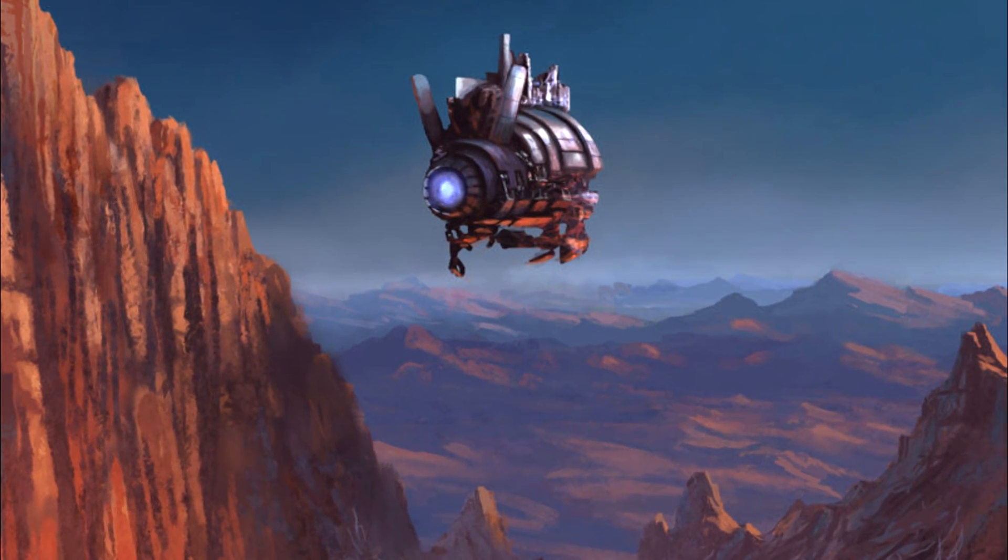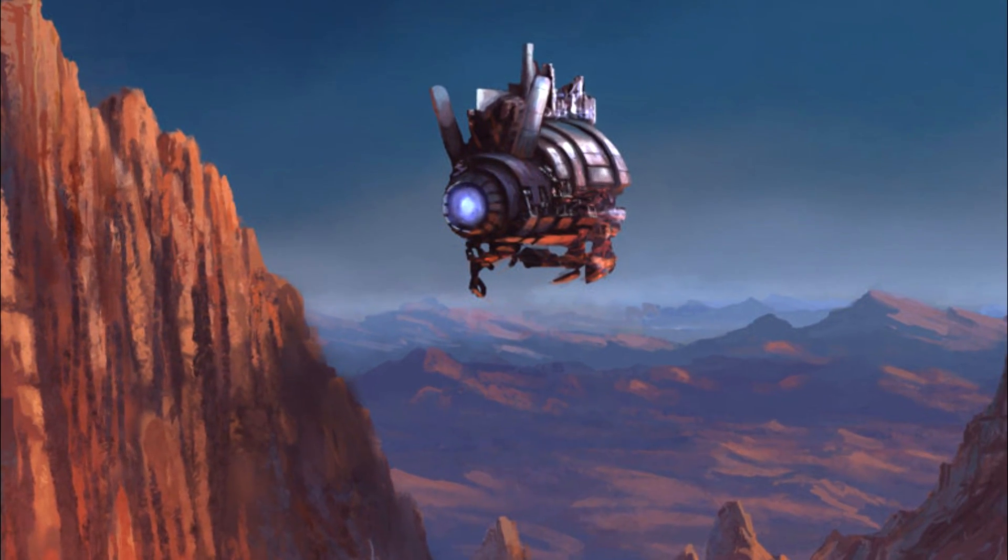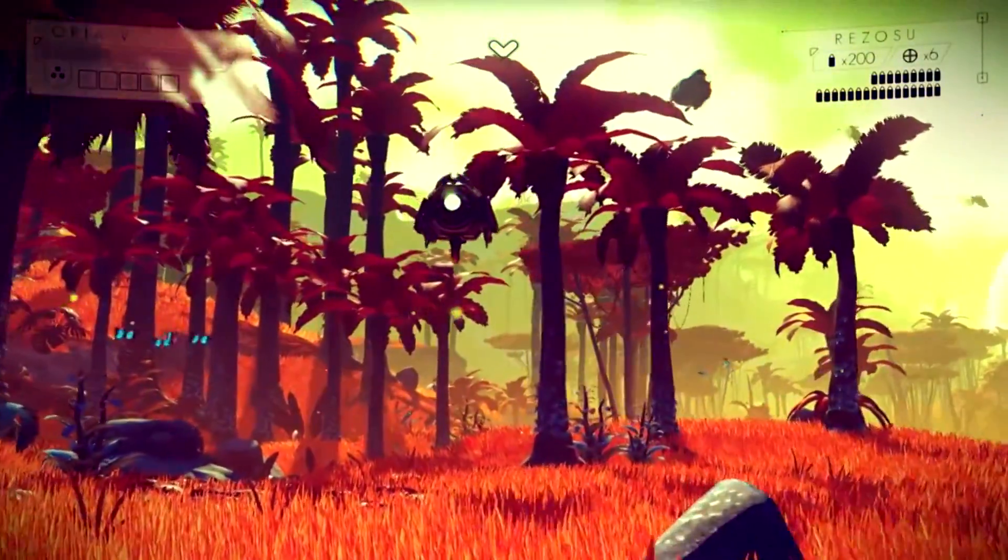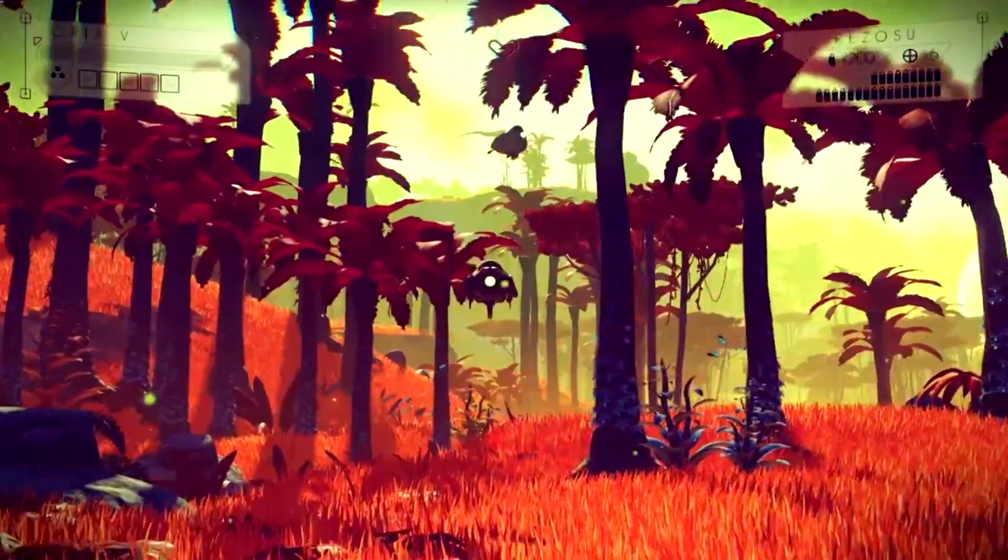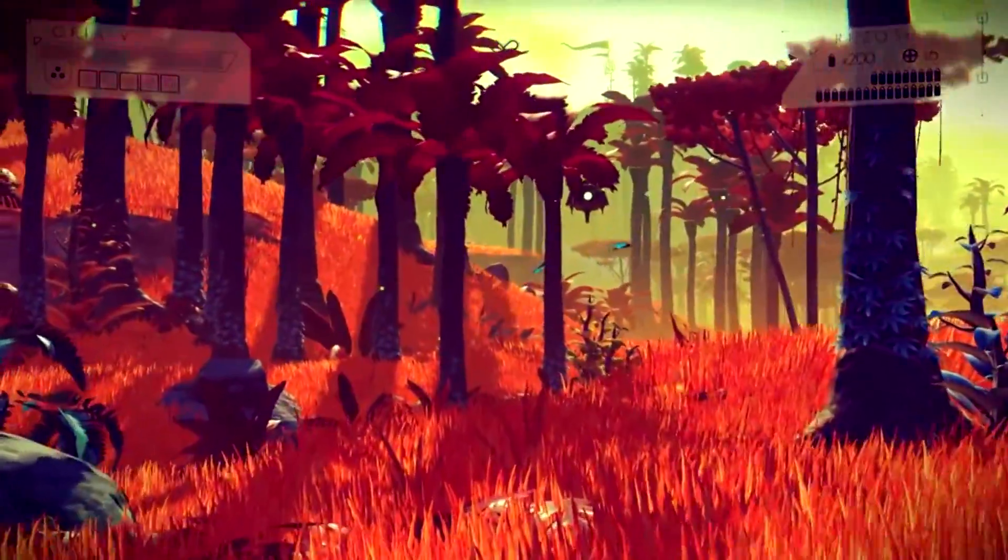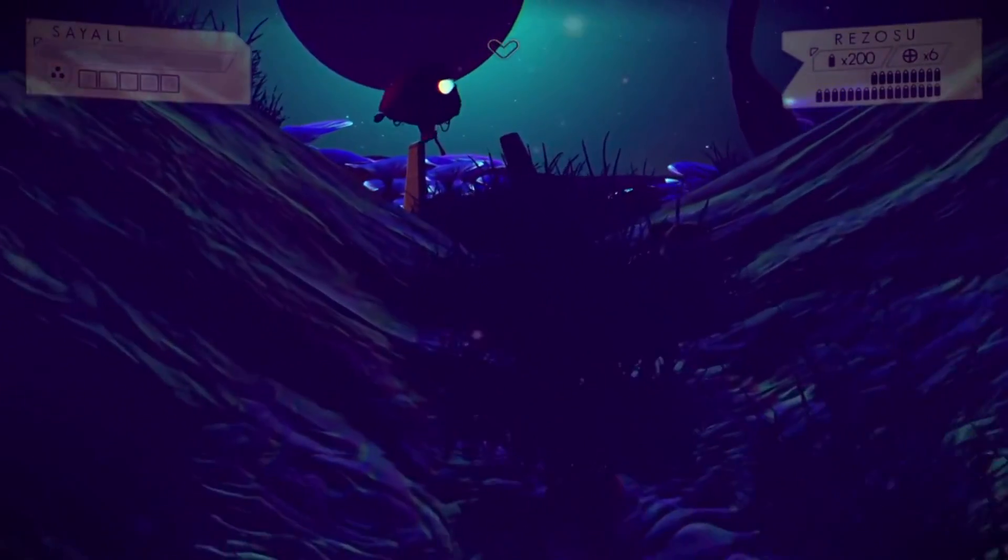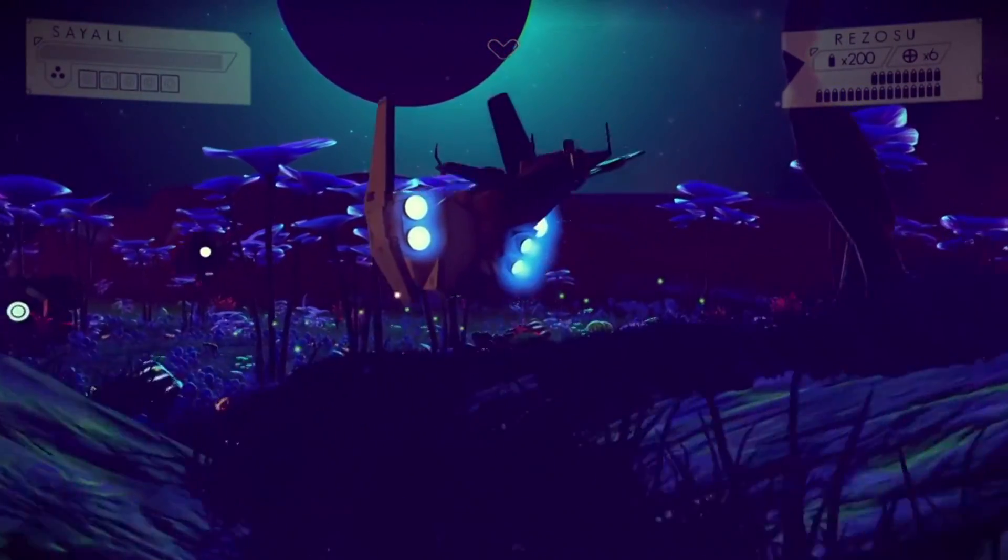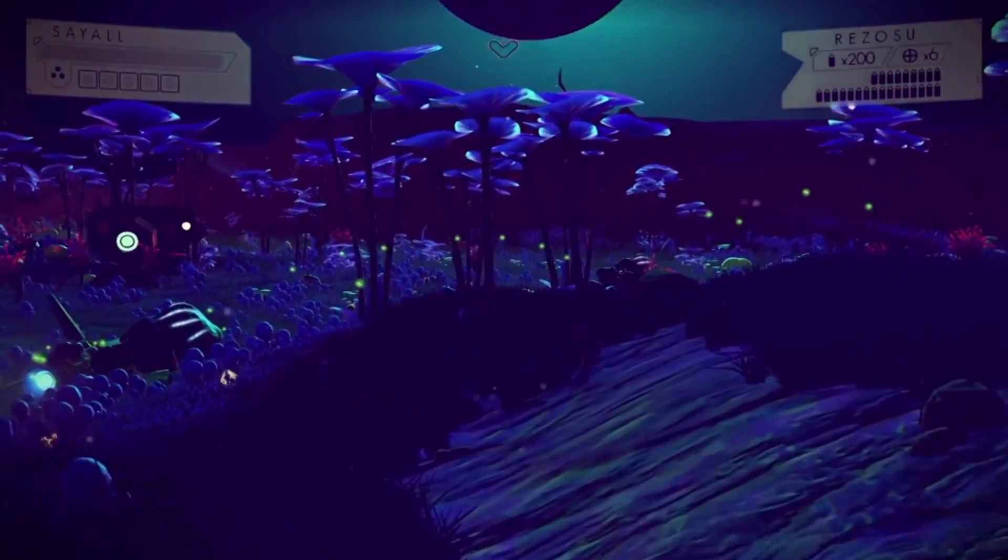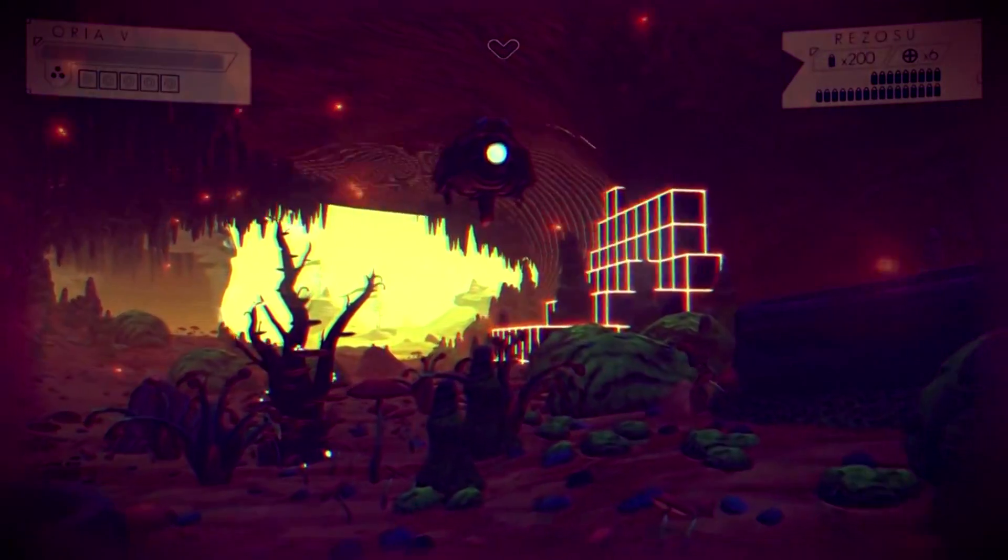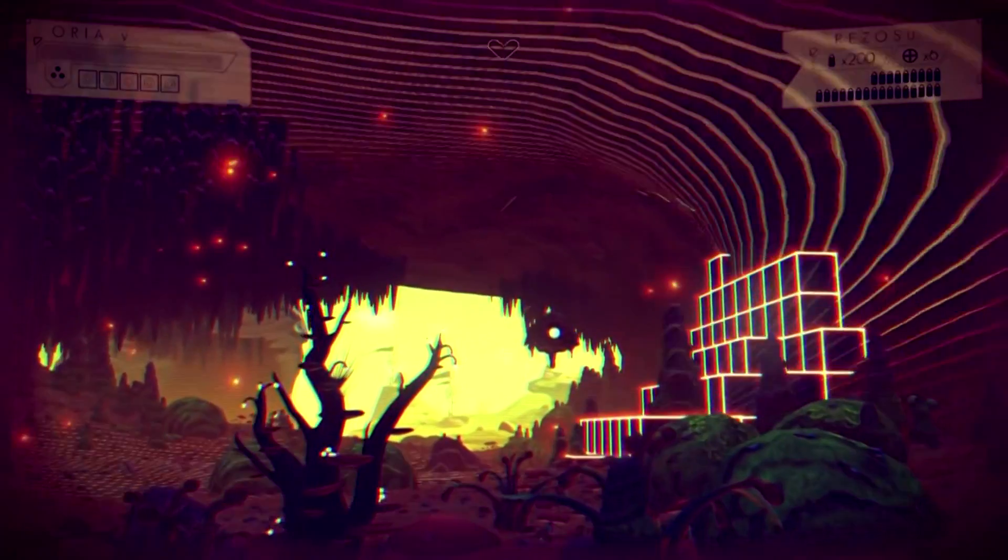On some planets, there will be robots called sentinels. And basically their objective is to kind of maintain order in the galaxy. So wherever they are on planets, if you start killing animals or mining resources too heavily, they'll start attacking you. So you'll see a lot of those throughout the galaxy as you explore the game. But no one knows the exact percentage of planets that will have these robots on them.